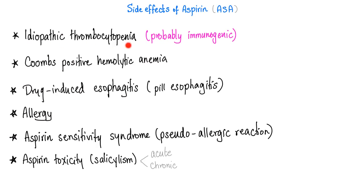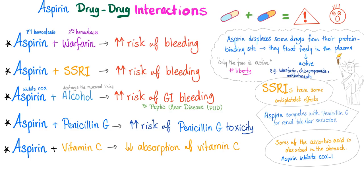Aspirin can also lead to idiopathic thrombocytopenic purpura, Coombs-positive hemolytic anemia, drug-induced esophagitis, aspirin sensitivity, and aspirin toxicity called salicylism. Medications you should never combine with aspirin include warfarin, SSRIs, alcohol, penicillin G, and vitamin C.